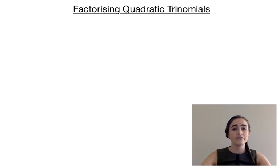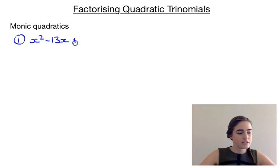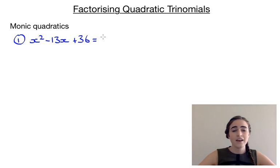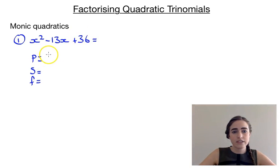First let's look at factorising monic quadratics. Our first example is x squared minus 13x plus 36. There are a lot of different methods for factorising monic quadratics. I'm just going to show you one today — it tends to be the most popular. If you know another method you learnt last year, you're welcome to use that. We're going to use what's called the PSF method, looking at product and sum. We need two numbers that have a product of positive 36 and a sum of minus 13.